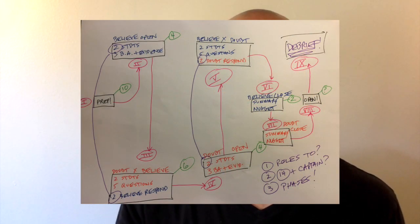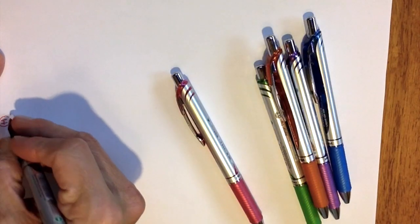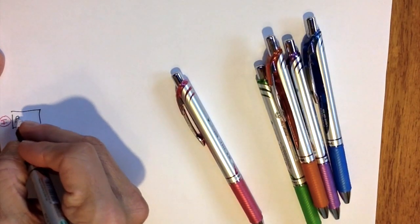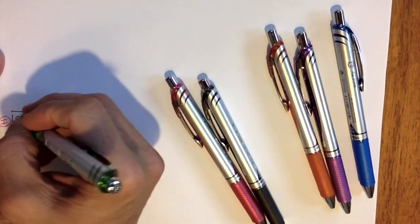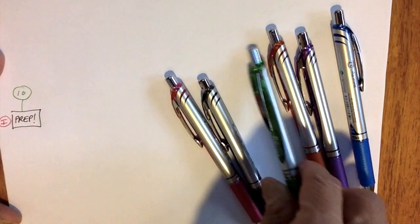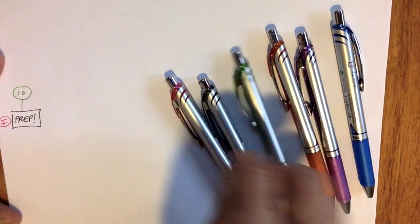Let me walk you through the debate introduction I give the first time. When students come in, I have them sit in two circles — the believe side on one side and the doubt side on the other. I draw a diagram on the board and walk through it, explaining each phase, each role, and what each role player should be doing during prep time. The first phase is the prep phase, which usually lasts around 10 minutes, and I tell all students how to spend that time depending on their role.